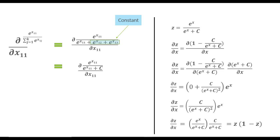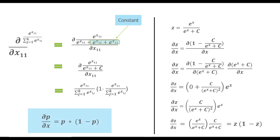We apply the same operation on the left-hand side expression, which reduces down to a similar expression. If we call the softmax output — the fraction e raised to the power x11 divided by the summation of other terms — as p, then dp by dx is simply p times (1 minus p).